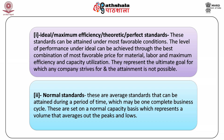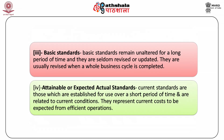Two: normal standards. These are average standards that can be attained during a period of time, which may be one complete business cycle. These are set on a normal capacity basis, which represents a volume that averages out the peaks and lows. Three: basic standards. Basic standards remain unaltered for a long period of time and are seldom revised or updated. They are usually revised when a whole business cycle is completed. Four: attainable or expected actual standards. Current standards are those established for use over a short period of time and are related to current conditions, representing current costs to be expected from efficient operations.